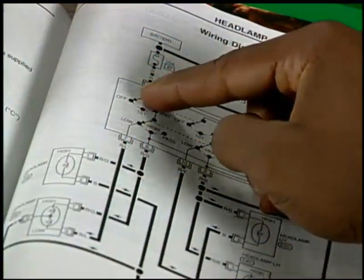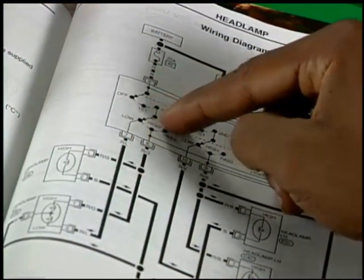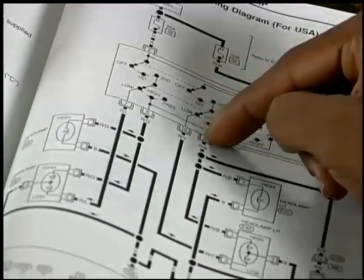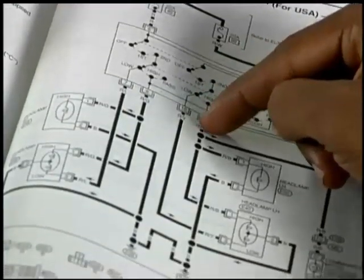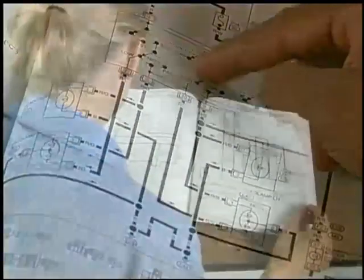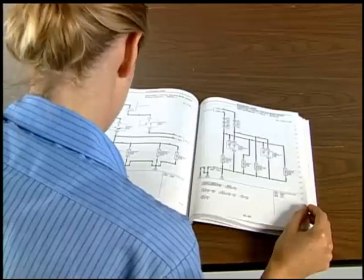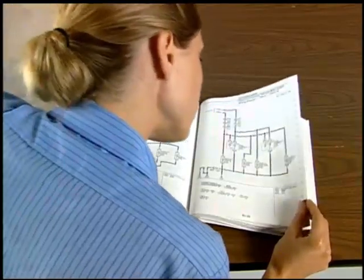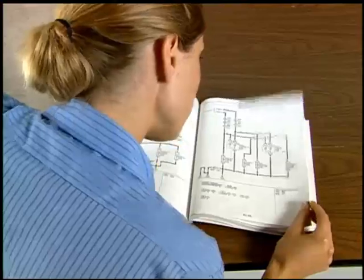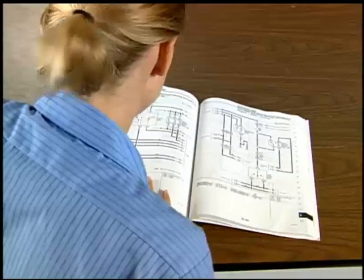Wiring diagrams are the road maps for the electrical systems on a passenger vehicle. They show the route of the power flow from the source through the switches and loads to the ground. Just as you learn to read traffic signs as you learn to drive, understanding the symbols in a wiring diagram will help you trace the route of power through the circuits.